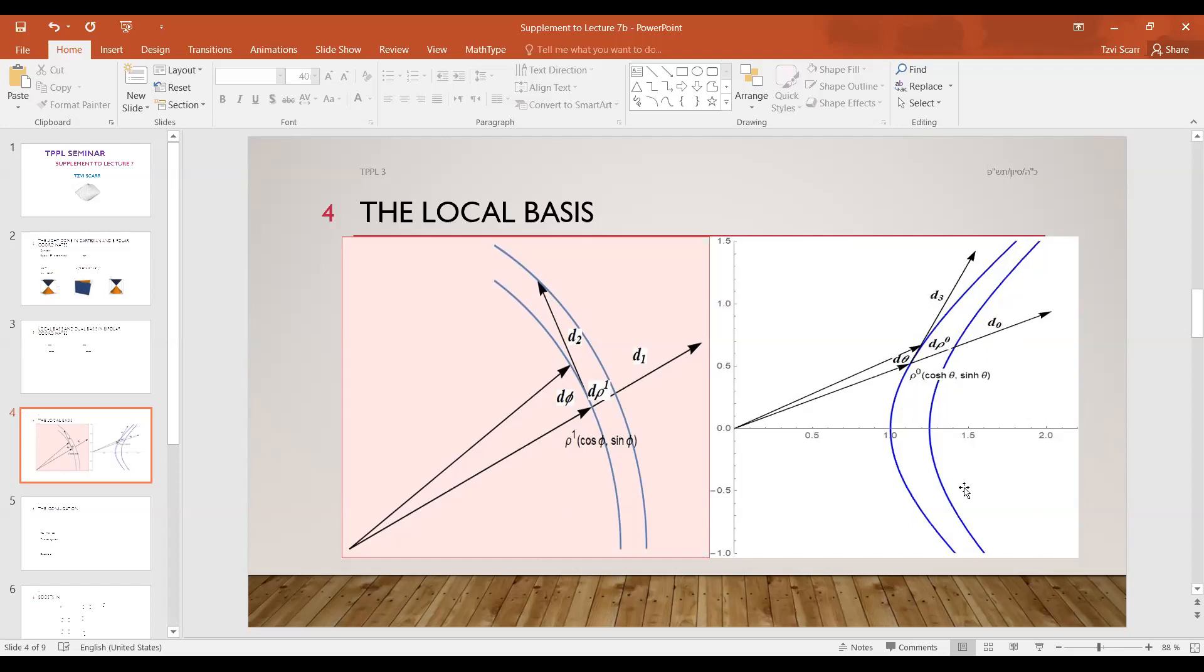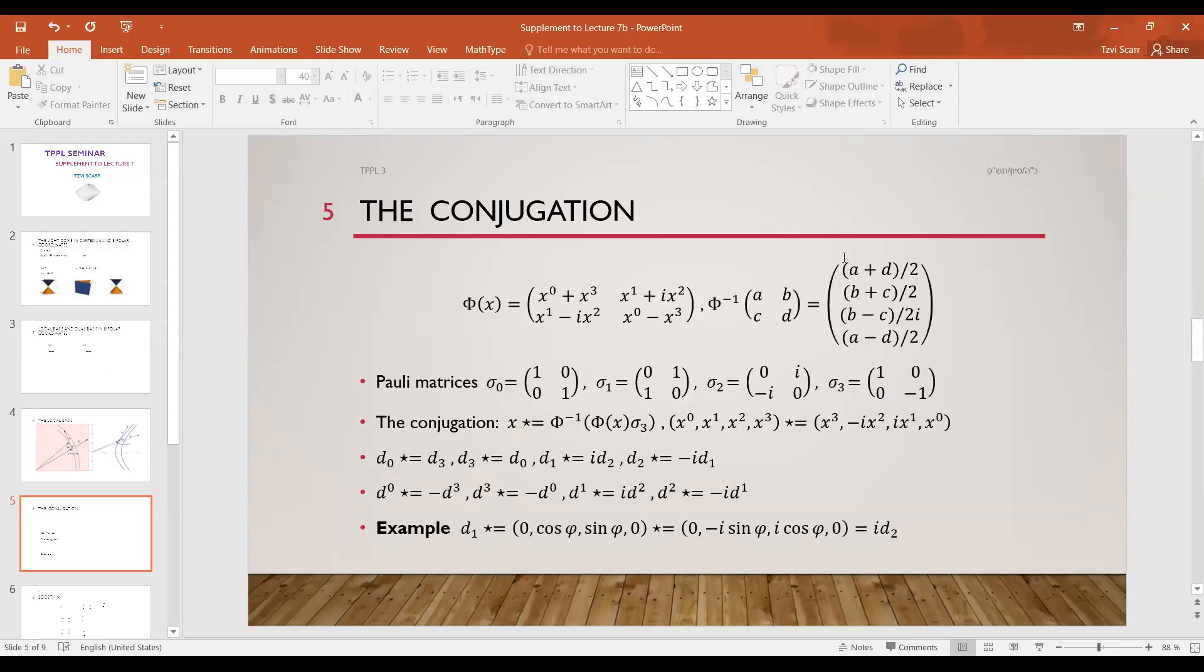And similarly on the right hand side we get d0 and d3. It's almost the same picture except instead of circles you have hyperbolas of constant rho zero. So again if you change rho zero, again it's in the radial direction, and this will give you a unit vector d0. And if you change theta, so you're moving along the hyperbola, so you have to take a tangent vector to the hyperbola, and that gives you d3. And d1 and d2 are perpendicular in the usual sense, but d0 and d3 are not, not in the Euclidean sense perpendicular, but in the Minkowski metric sense they are orthogonal.